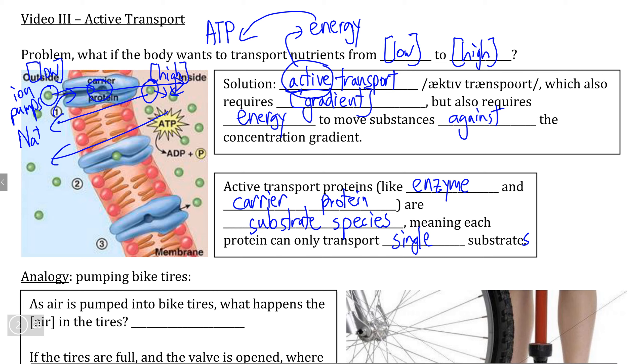However, the only difference in the function of active transport proteins is the need for ATP, meaning the conformational change that shifts the ion from outside the cell to inside the cell against the concentration gradient will only happen as long as there is an energy source.